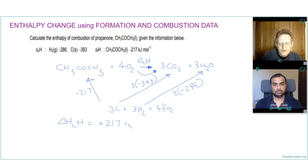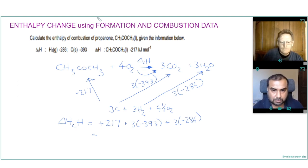And then the other ones just stay the same. So add 3 minus 393 and add 3 minus 286. And put that into the calculator. So 217 plus 3 times minus 393 plus 3 times minus 286 is minus 1820 kilojoules per mole.